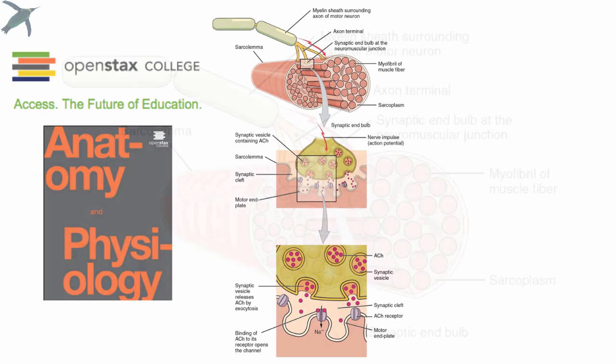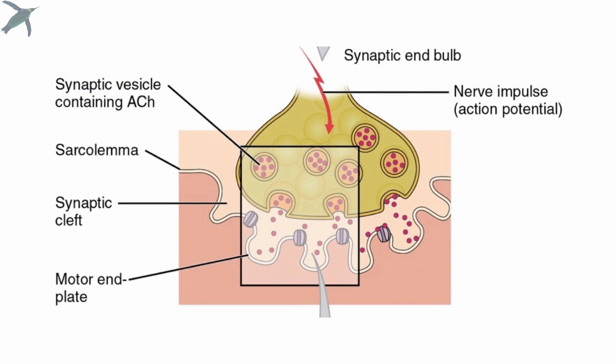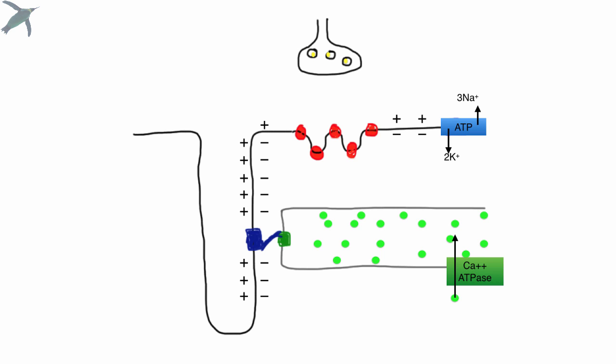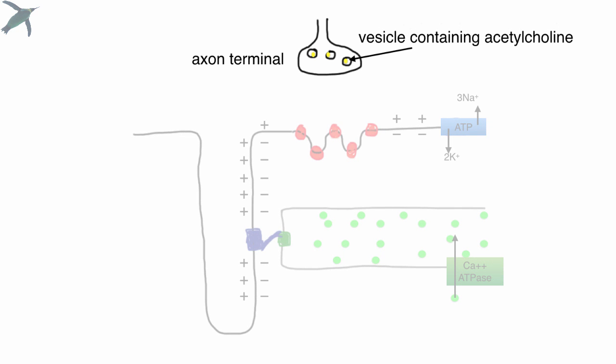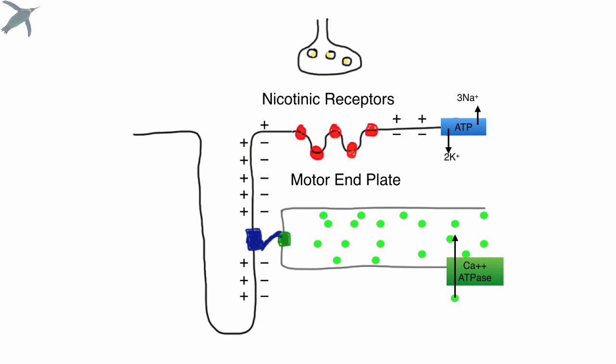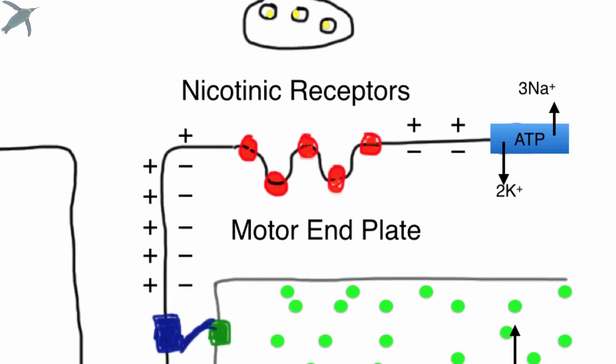Now, we're going to look at a close-up of a somatic motor neuron and how it connects with a skeletal muscle cell. And we're going to blow up this region here. And we see the motor end plate, which is an infolding of the skeletal muscle cell membrane. Now, here is the cartoon that I've made to show excitation-contraction coupling. So here we have the somatic motor neuron. And you see vesicles containing the neurotransmitter acetylcholine. Now, everything else in the drawing is skeletal muscle.